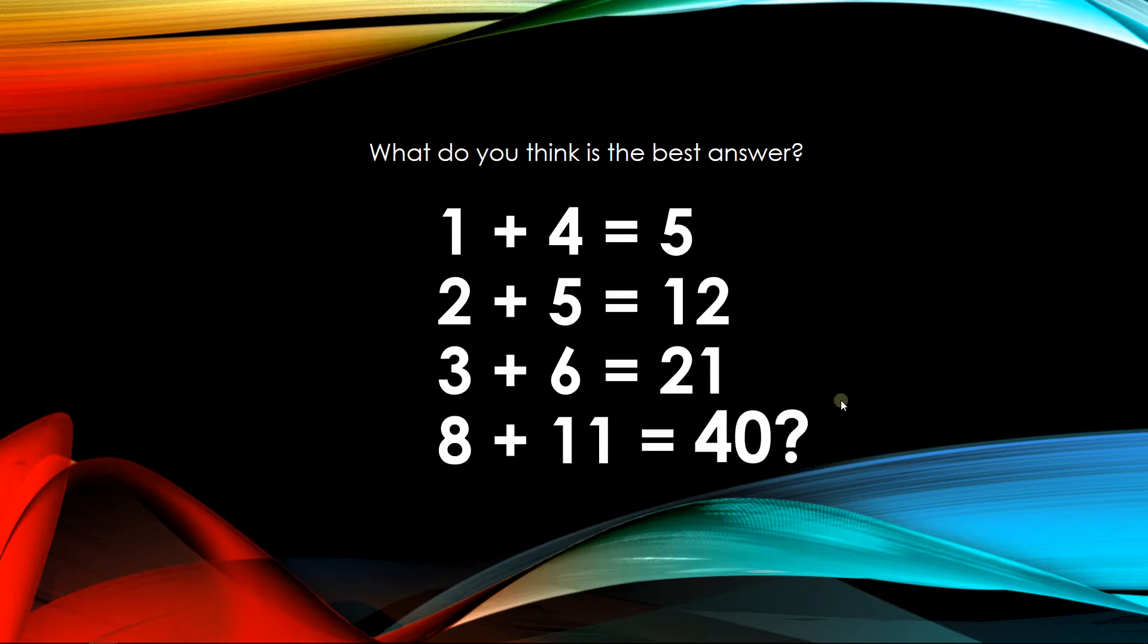Is that right? Is it the best answer? Let's see. So we have 1 plus 4, 2 plus 5, 3 plus 6. But if we see there's something like skipping the numbers here from 3 to 8.